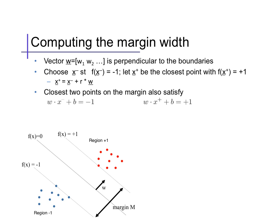Some simple geometry will complete the analysis. We can compute the value of the scalar r by plugging our definition x plus equals x minus plus r times w into the positive hyperplane equation, giving this. Then rearranging and plugging in the negative hyperplane equation here, giving the value of r.